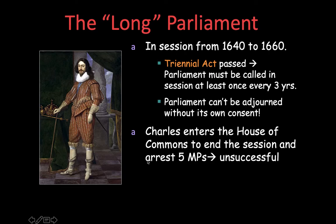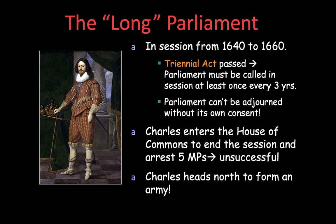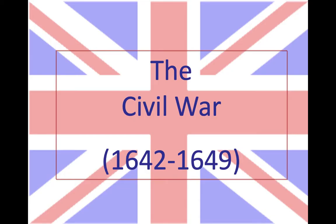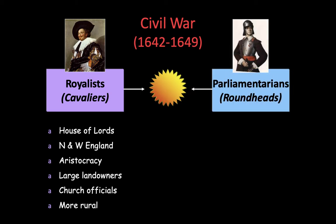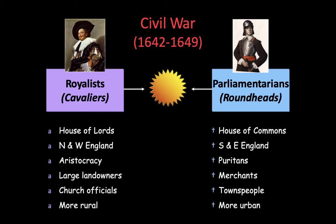Charles goes into the House of Commons to arrest five members of Parliament — his enemies, the most radical members of the group — but he is not able to do that. Now a civil war breaks out. The English Civil War is the royalists on one side and the parliamentarians on the other: Roundheads versus Cavaliers. The royalists supported the king, rode on horseback, and were members of the House of Lords and the aristocracy. The parliamentarians — the Roundheads — are led by Oliver Cromwell, a member of the House of Commons and a Puritan.